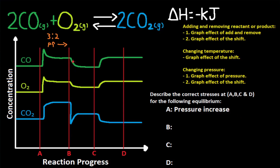At B, CO is decreasing and O2 is decreasing, while CO2 is decreasing and then increasing. This has to be adding or removing a reactant or product. It's clear that CO2 is being removed. When CO2 is removed, point at what is being removed — shift right. A shift right increases products and decreases reactants, which matches the graph. So the correct stress at B is that CO2 is removed.